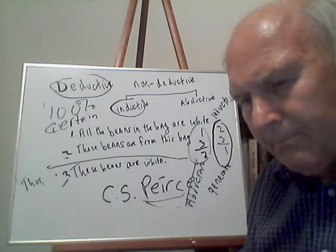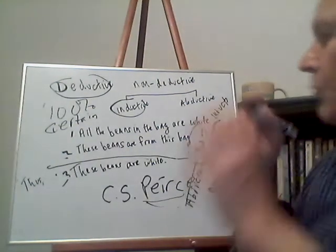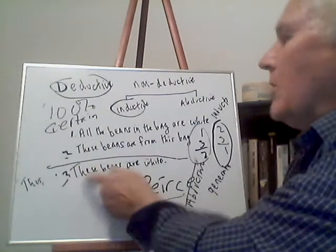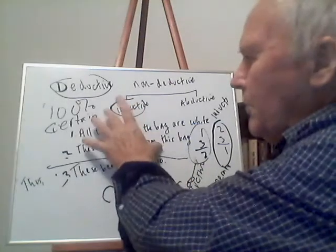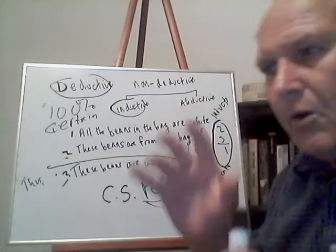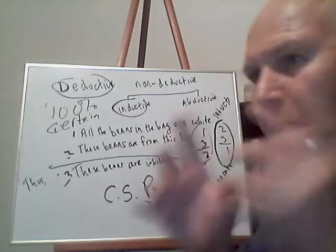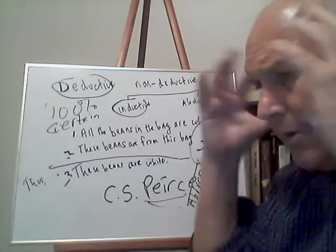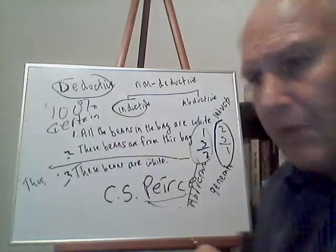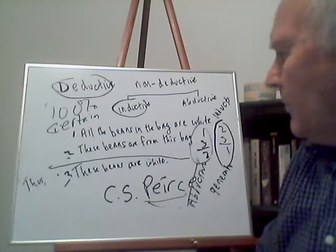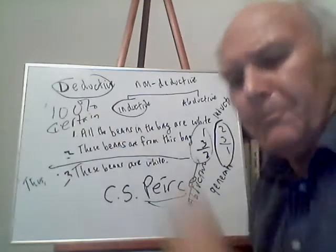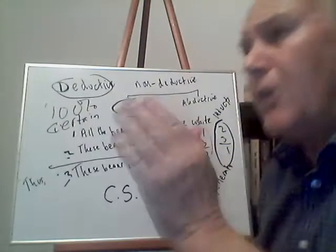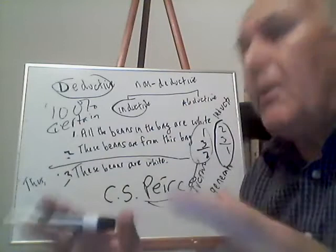Let me say something about why deductive arguments give you 100% certainty. The reason is simple: the information contained in the conclusion of a deductive argument is already contained in the premises. You look at the conclusion of a valid deductive argument and there's nothing new — you won't learn anything new. You have 100% certainty, but there's a cost: you don't learn anything. It's like saying 'this is a circle, therefore it's round' — true, but you already knew that.